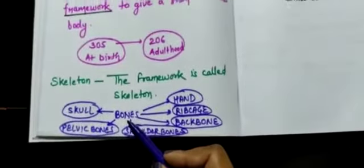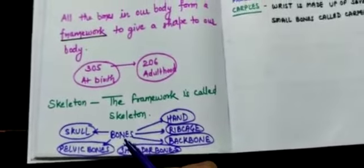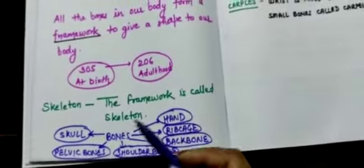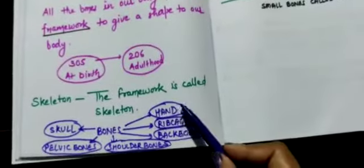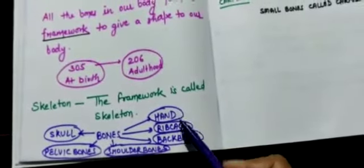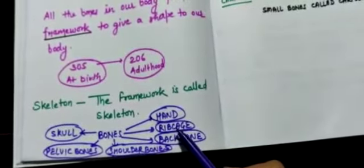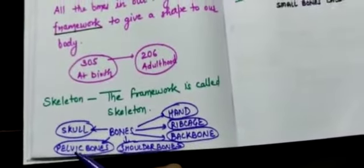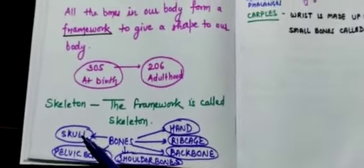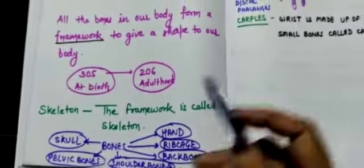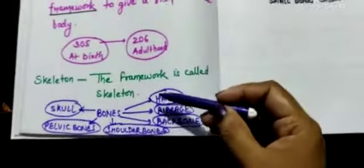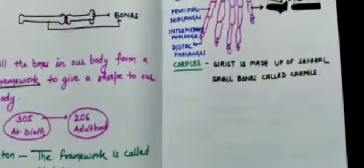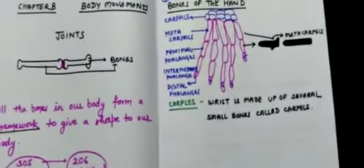Today our topic is bones. How many types of bones are present in our body? Bones are present in the hand, ribcage, backbone, shoulder bones, pelvic bones, and skull. So there are six types of bones, and we will deal with them one by one.